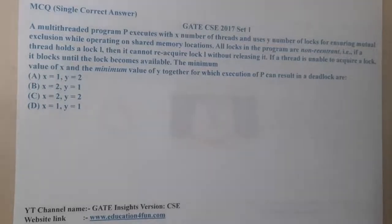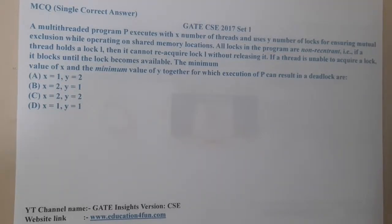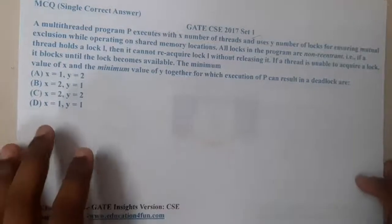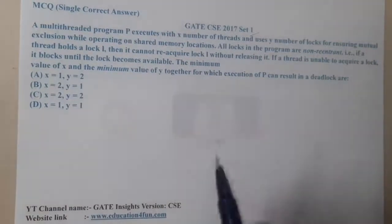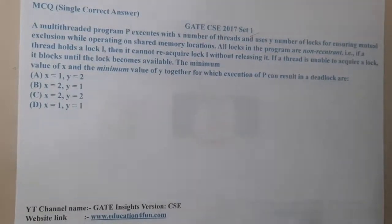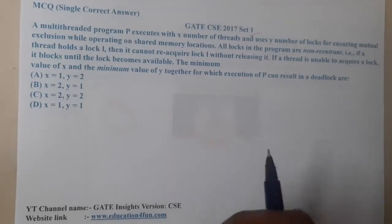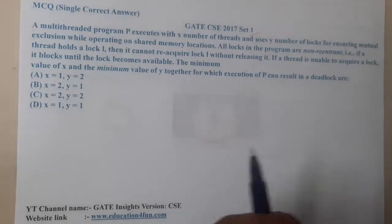Hello guys, we are back with our next lecture. This question belongs to GATE CSC 2017 Set 1. The given question is: a multi-threaded program P executes with x number of threads and uses y number of locks for ensuring mutual exclusion while operating on shared memory locations.